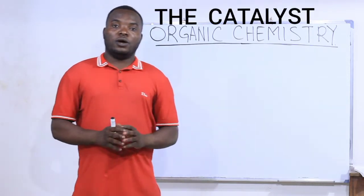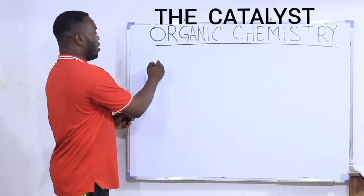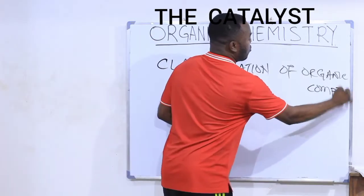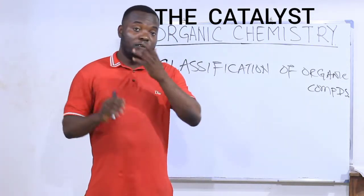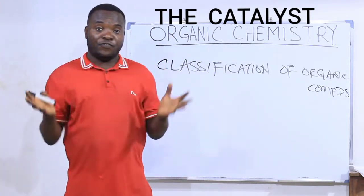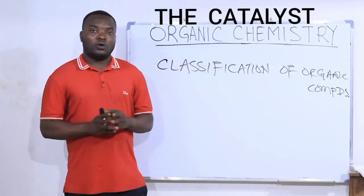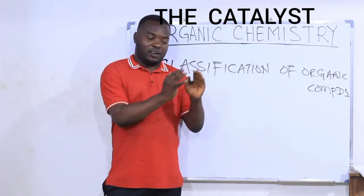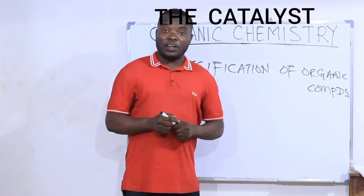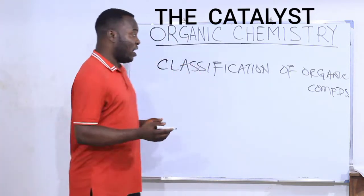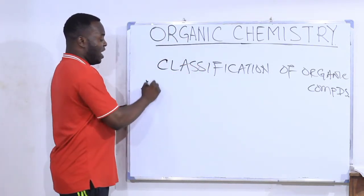Today we'll be talking about classifications of organic compounds. As you know, we have different organic compounds, and these compounds are classified. The first class of organic compounds we have are the ones we call the aliphatic compounds.